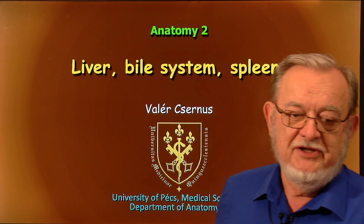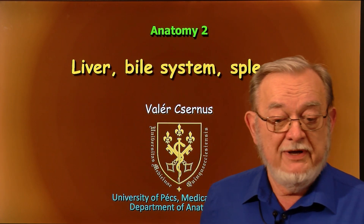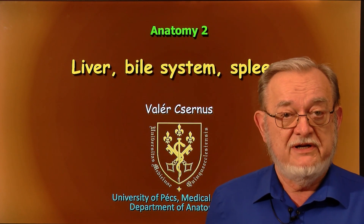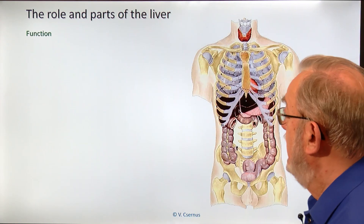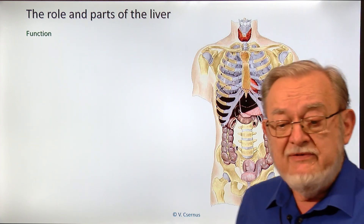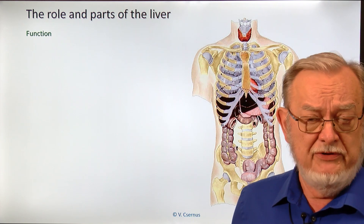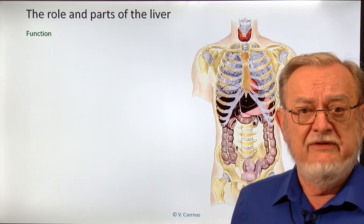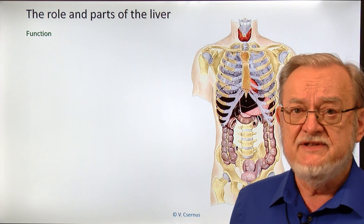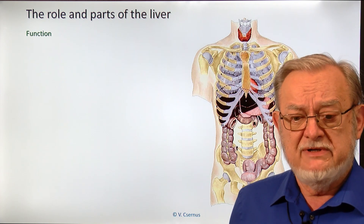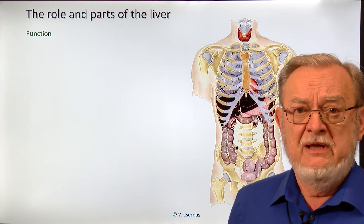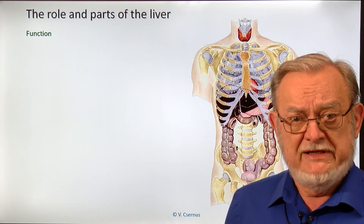Dear students, today I will talk about the anatomical structure of the liver and the spleen. Let's start with the liver. Whenever you become familiar with a new organ, the very first question you ask yourself is: why do we have this organ? What is the function of this organ in our body? Why is it good for us that we have this organ?